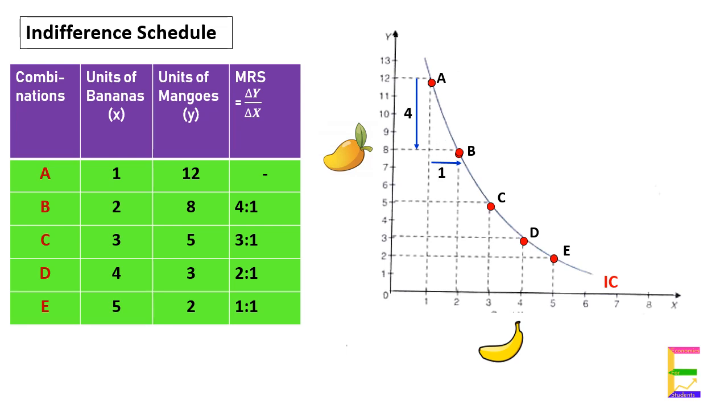Hence, MRS is equal to four. This is because in bundle A, the consumer has twelve units of mangoes and only one unit of banana, so his marginal utility for banana is very high and he is ready to sacrifice four mangoes to get one additional unit of banana.